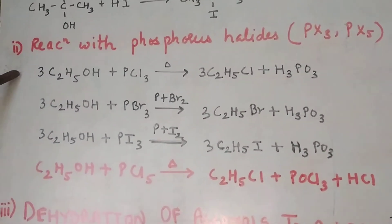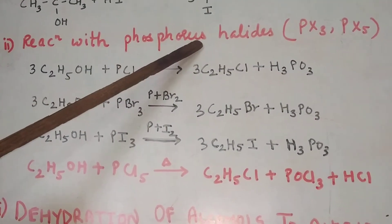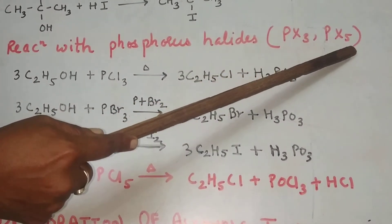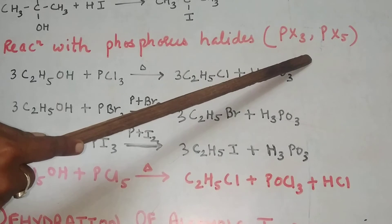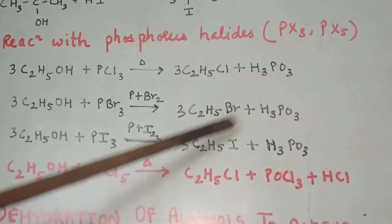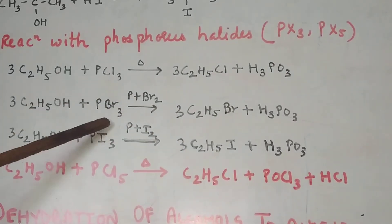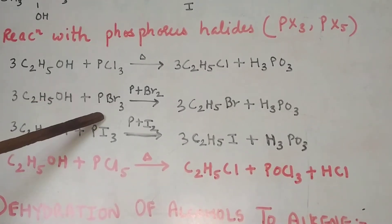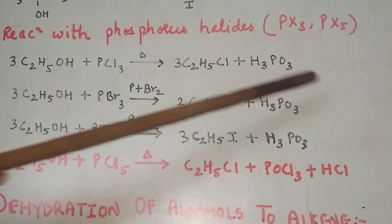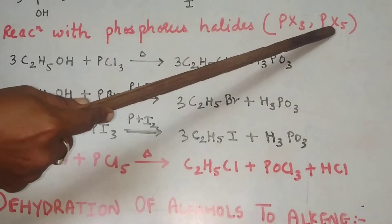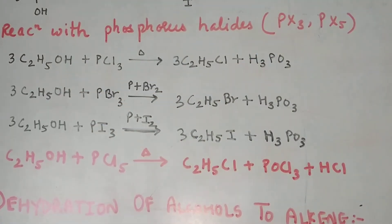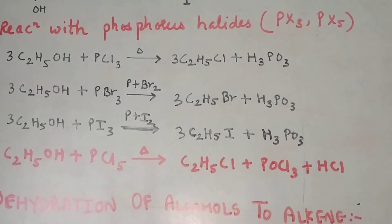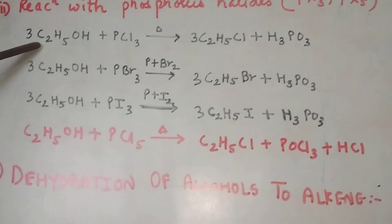Next reaction: the alcohol reaction with phosphorus halides. Phosphorus halides are of two types: PX3 and PCl5. Under PX3 we have PCl3, PBr3, and PI3 — three types of phosphorus trihalides. For phosphorus pentahalide, we have only one type: PCl5, phosphorus pentachloride. So let's go for the reaction. Ethyl alcohol...